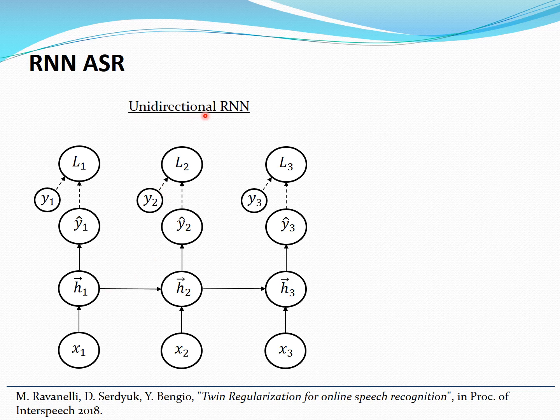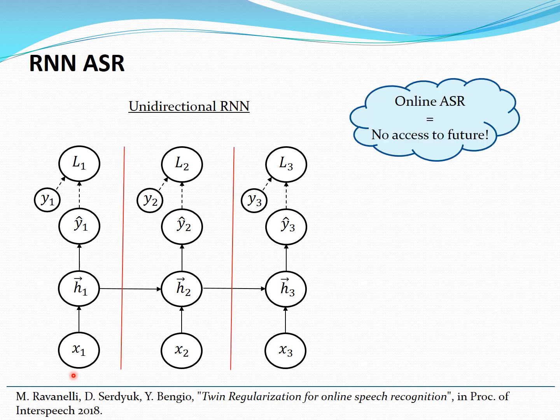These are unidirectional RNNs, but in speech recognition bidirectional RNNs are also very popular. They scan the speech sequence two times — once from the beginning to the end and once from the end to the beginning. They concatenate the states and are able to improve performance because predictions are based on the full sequence. However, bidirectional RNNs can only be used for offline speech recognition, not online, because for online speech recognition we don't have access to the future.